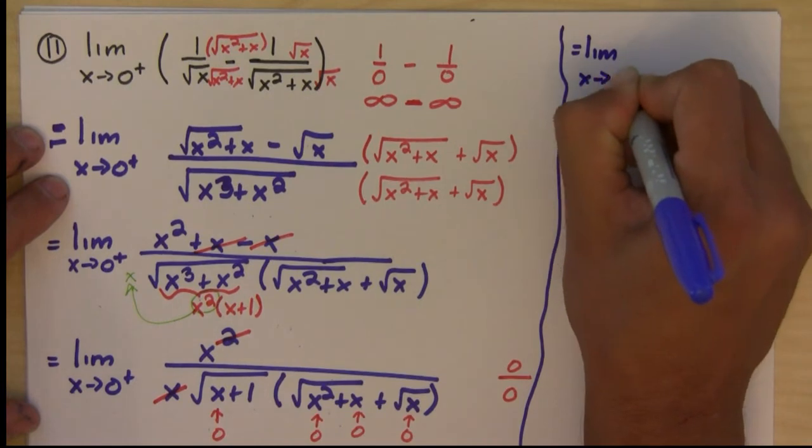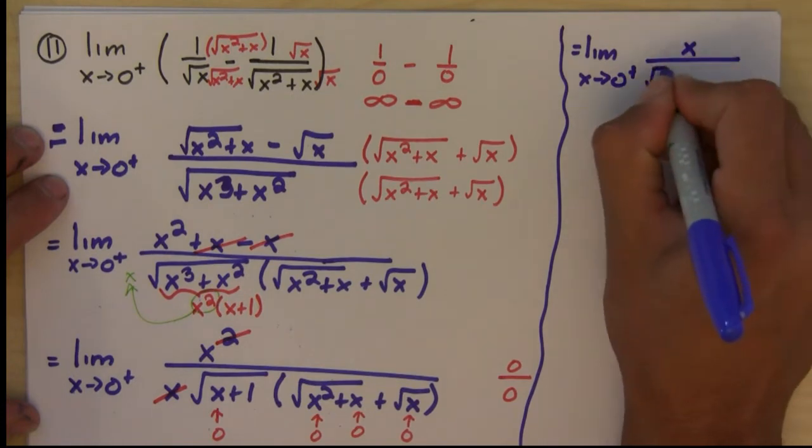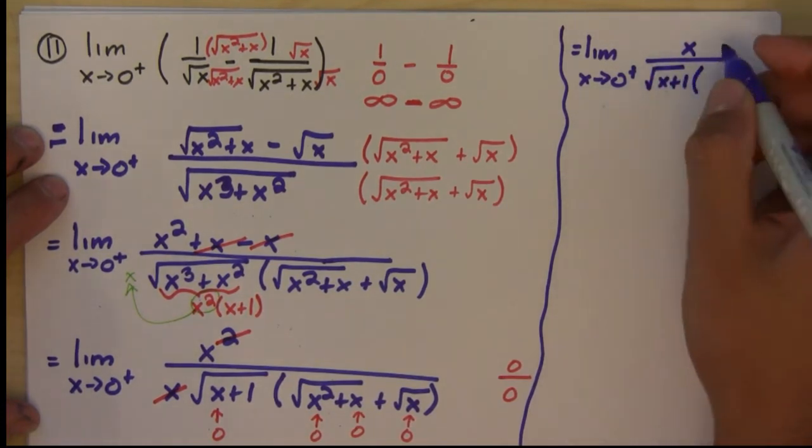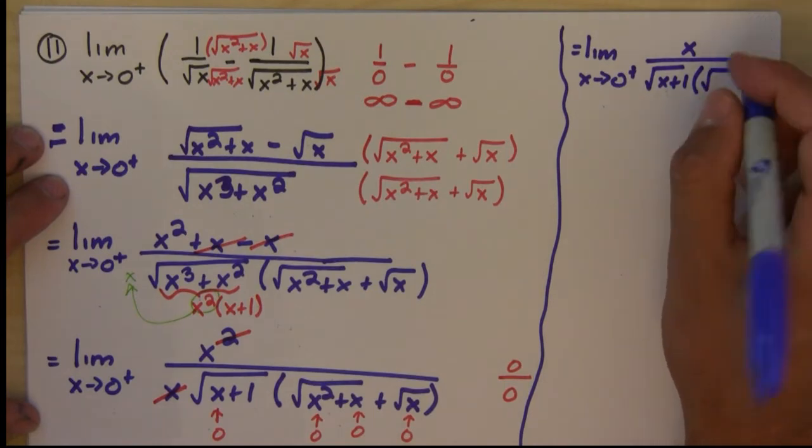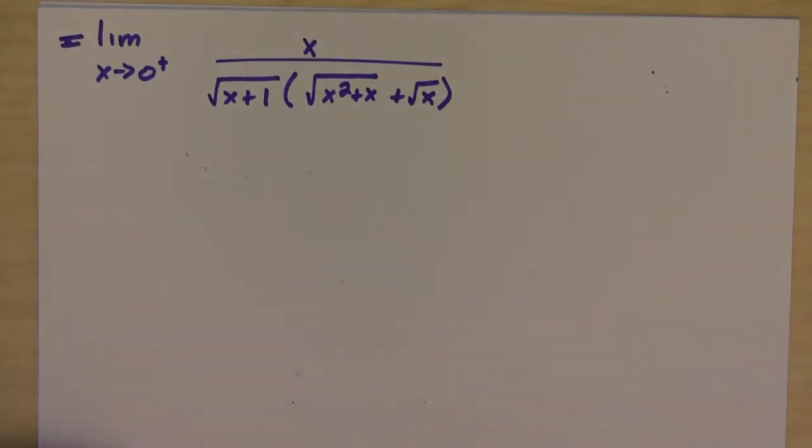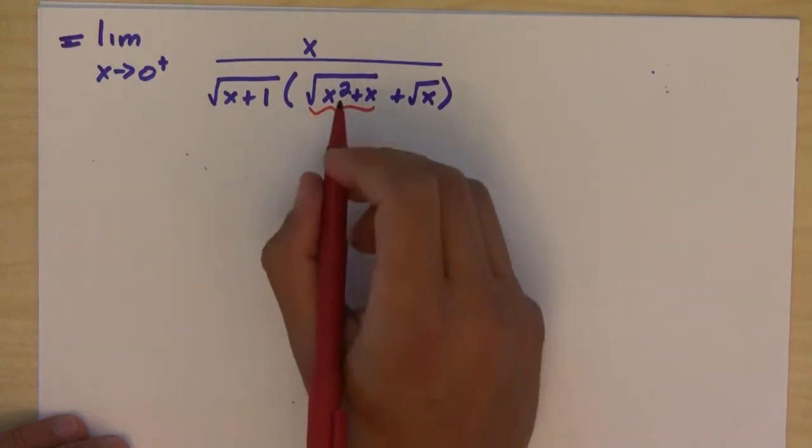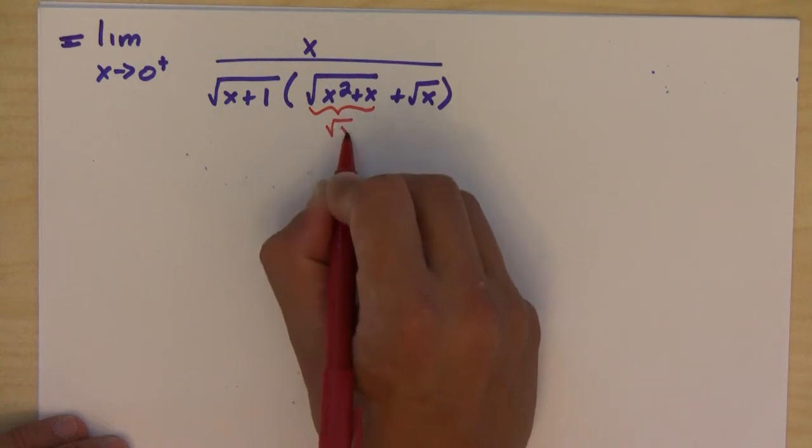So let's continue. Let's rewrite it. We have the limit as x approaches 0 from the right of x over square root of x plus 1 times square root of x squared plus x plus square root of x. So this is what we have left over, and we just saw that we still get an indeterminate form. Now, in calculus, sometimes we factor out funny things.